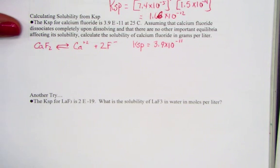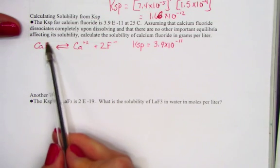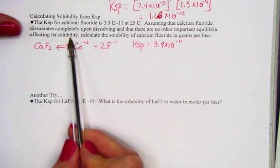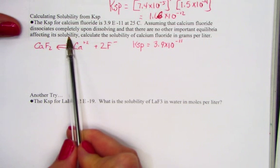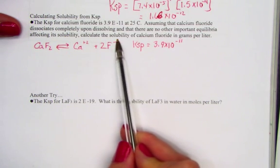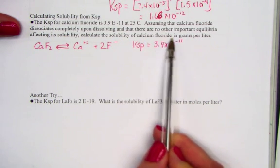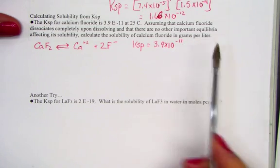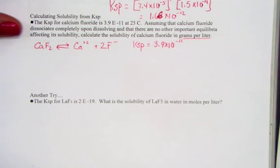Assuming that calcium fluoride dissociates completely, there's no other important equilibria affecting its solubility. That's placed in the problem to tell us there's no common ion effect, which would affect solubility. We're being asked to calculate the solubility of calcium fluoride in grams per liter. Grams per liter ends up to be our target.